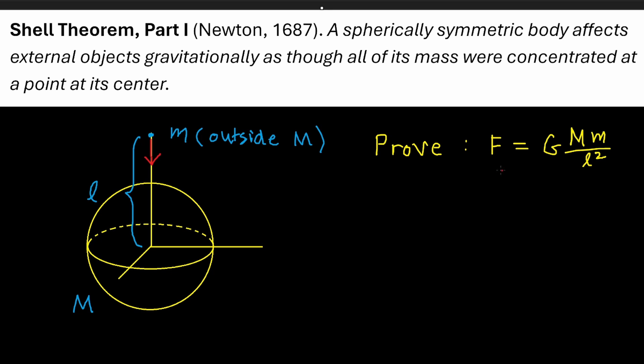So basically the result says that the inverse squared law for the gravitational force, which was originally postulated to hold between point masses, but now, according to this result, we can apply the inverse square law to spherically symmetric bodies.